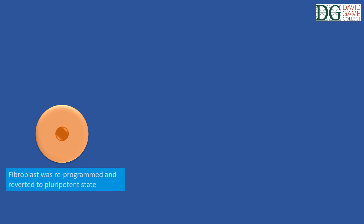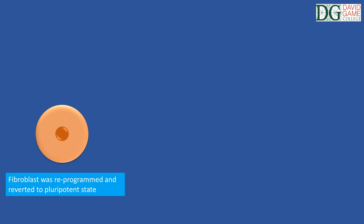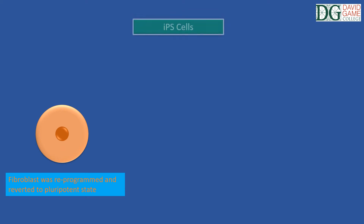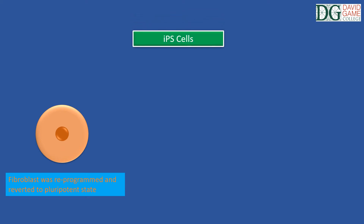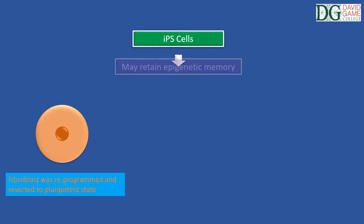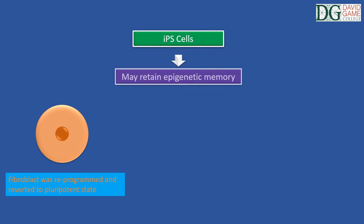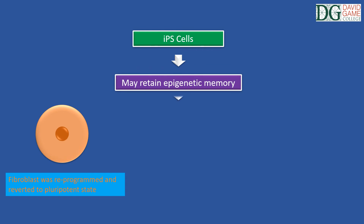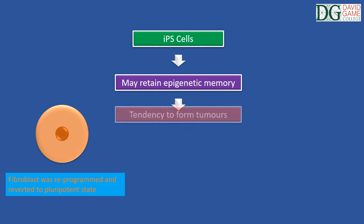Previous research used skin cells to develop iPS cells, which were grown in culture. Induced pluripotent stem cells are not without their problems, one of which involves overcoming epigenetic changes, because iPS cells may retain epigenetic memory. Another issue relates to the tendency of iPS cells to form tumors.